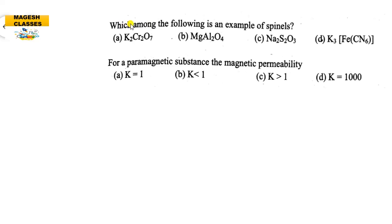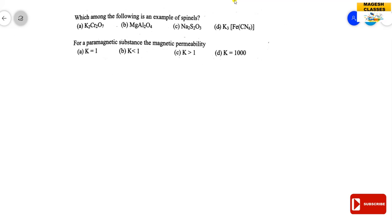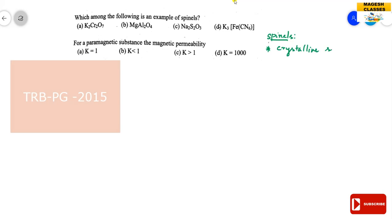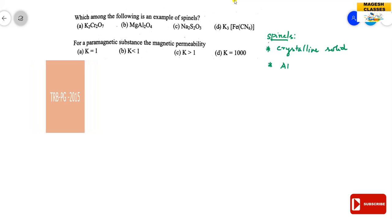The first question: which among the following is an example of spinels? Spinels compounds — let's see the details. First of all, what are spinels? Spinels are a type of crystalline solids. The general formula is AB₂X₄.